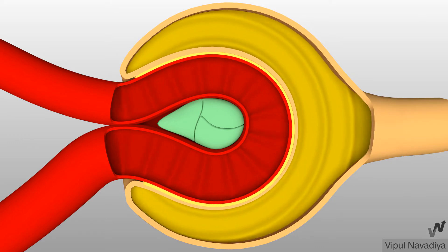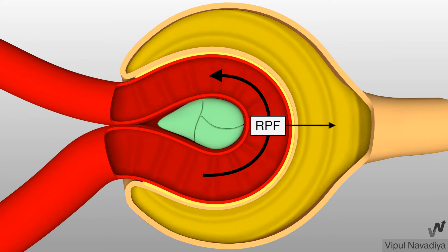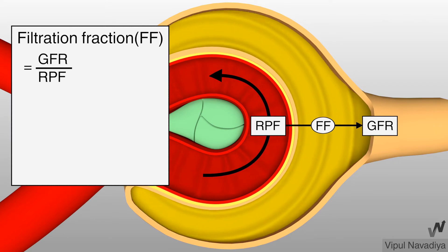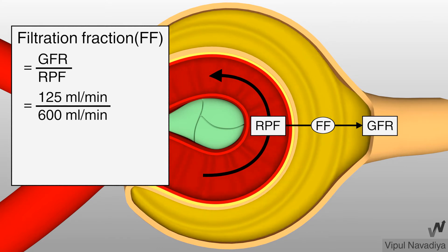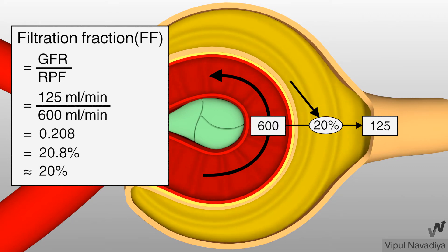Now filtration fraction. The fraction of renal plasma flow which becomes filtrate is called filtration fraction. So basically it is ratio between GFR and renal plasma flow. Normal GFR is 125 ml per minute and renal plasma flow is 600 ml per minute. So filtration fraction is about 20.8%. You can remember that around 20% of plasma flowing through the kidney becomes filtrate.